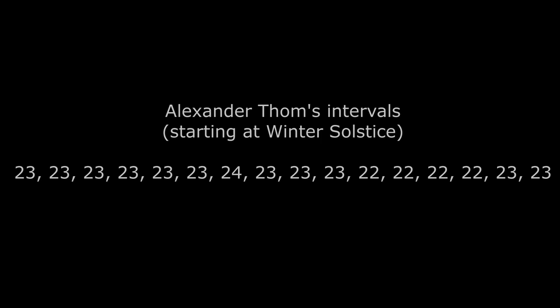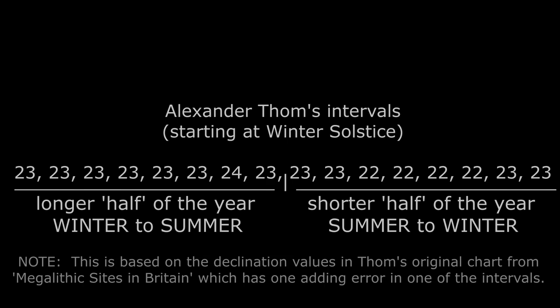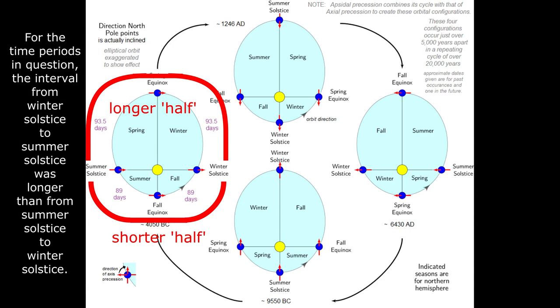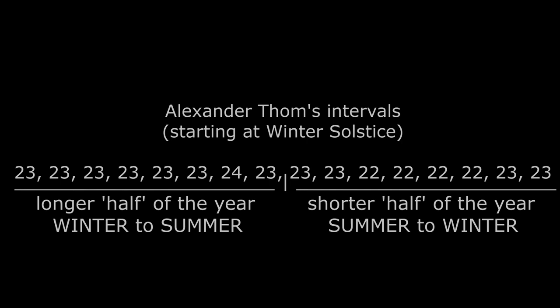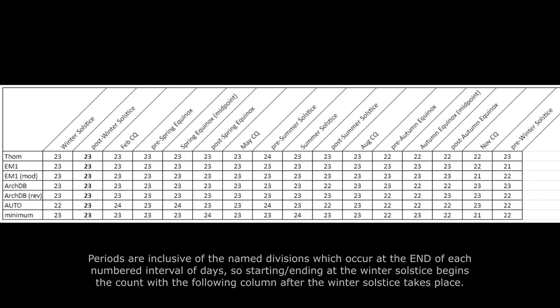Thom's proposed intervals match well with how the days would actually need to be distributed in the past when the time from one solstice to the next was uneven because of the orientation of the Earth's axis in relation to the nearer and faster part of its orbit. This produces mostly 23-day intervals, with some of 22 days, and one of 24 days, with the larger and smaller intervals being positioned in the longer and shorter portions of the year.